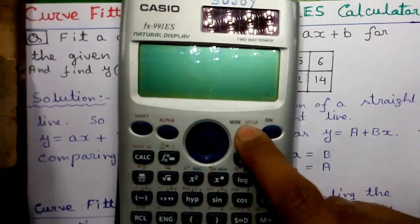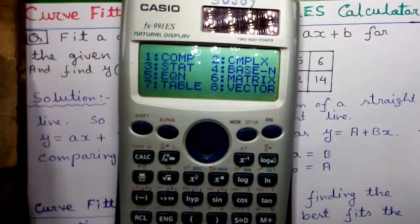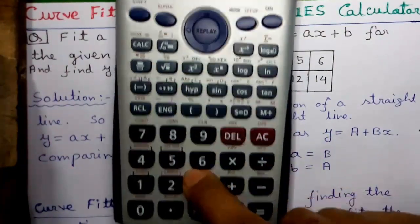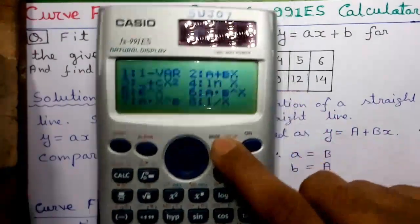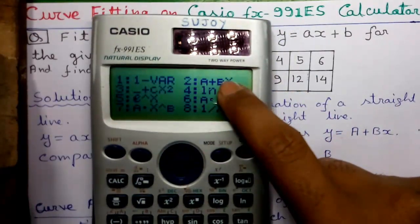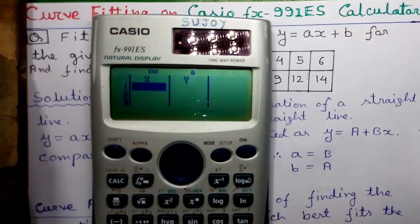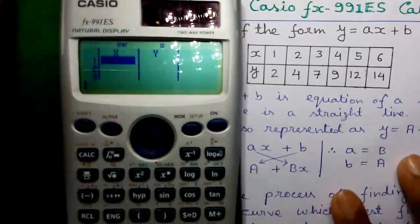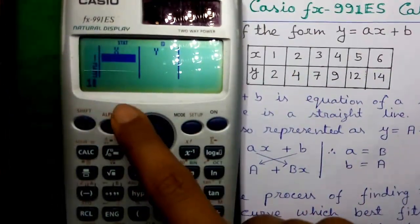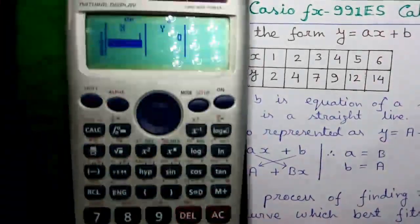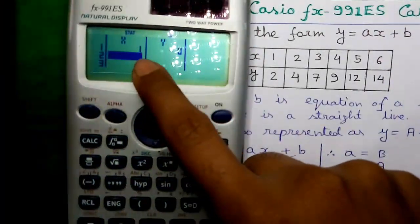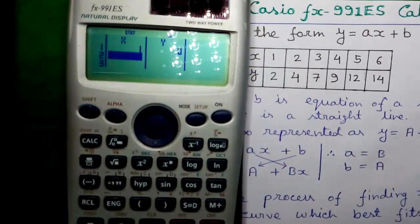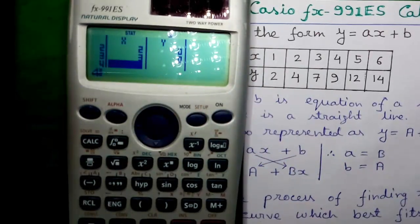For that, press the mode button and press 3 for statistics mode. Next, press 2 for A + BX. And enter the values onto the calculator. First enter the X values. To enter a value, type the value and press equals. The cursor will come one step down. Enter: 2 equals, 3 equals, 4 equals, 5 equals, 6 equals.